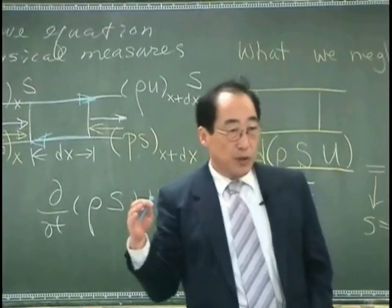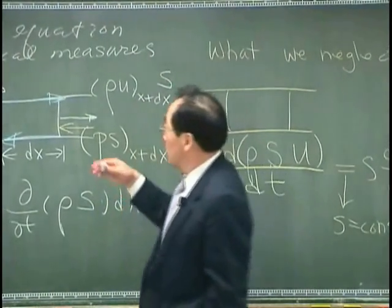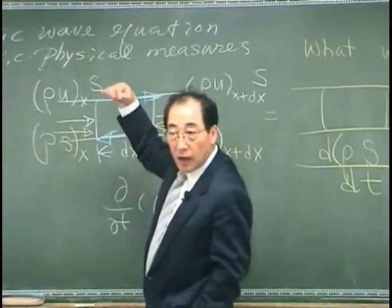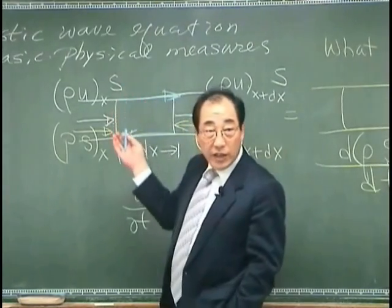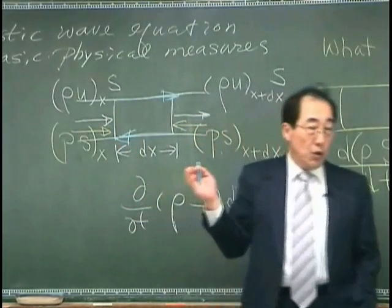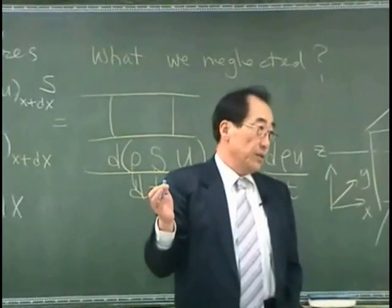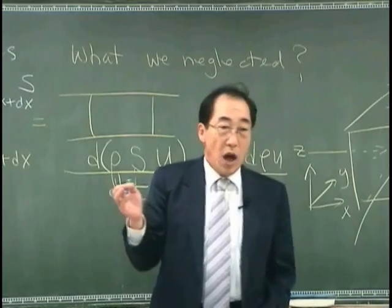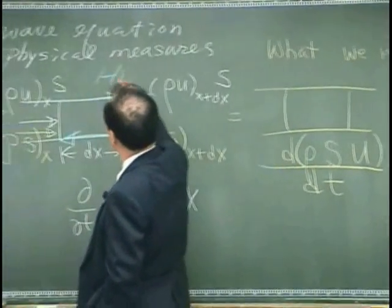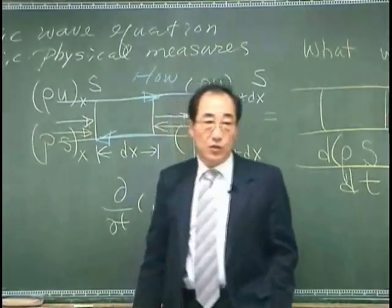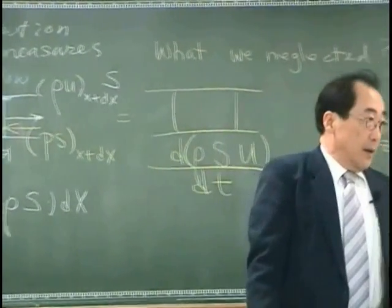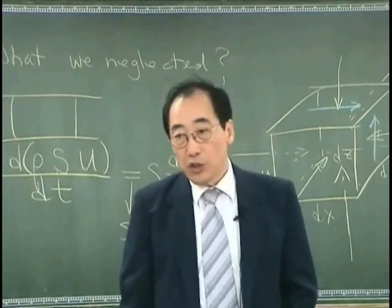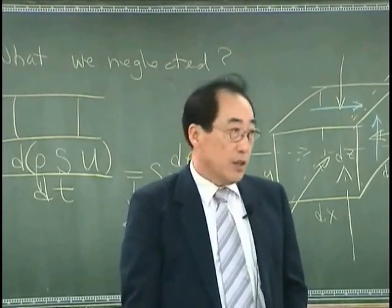For example, if we think that this force is proportional to the velocity gradient, then we call that a viscous force. We neglected it. How can we neglect these forces? Viscous force is small compared with the normal force.